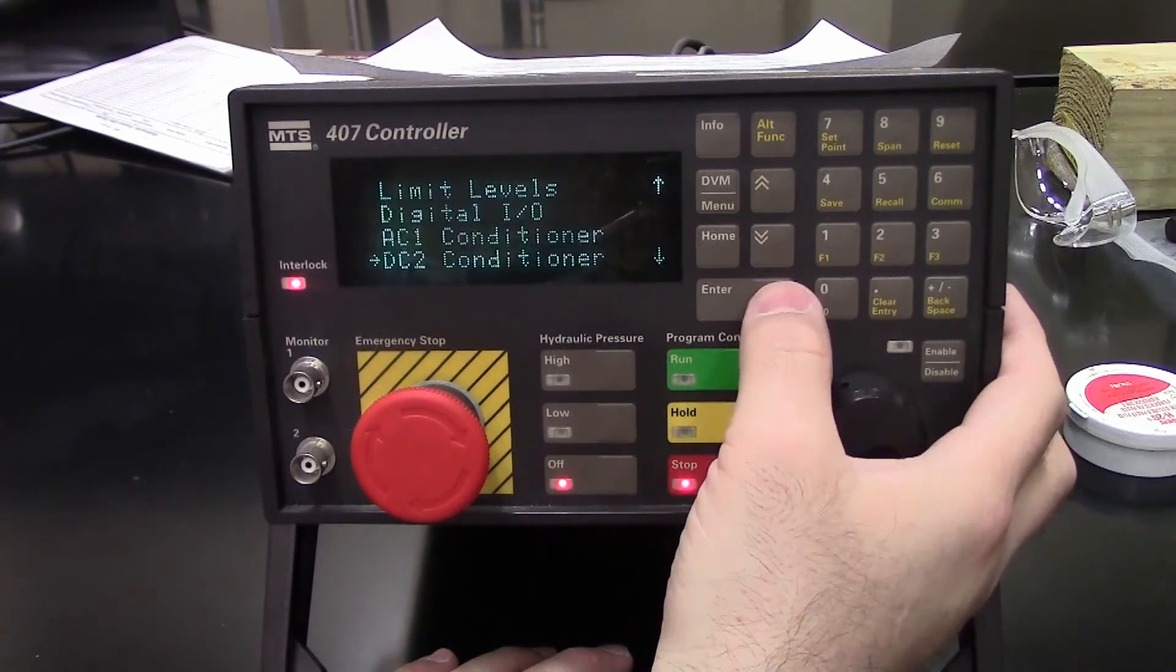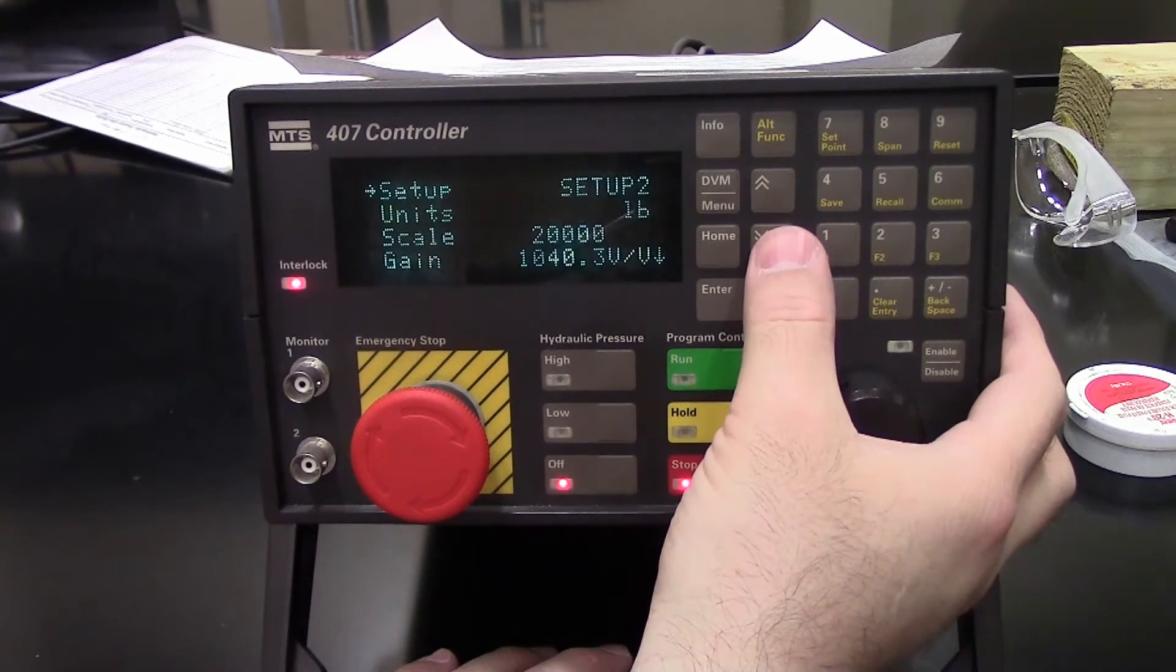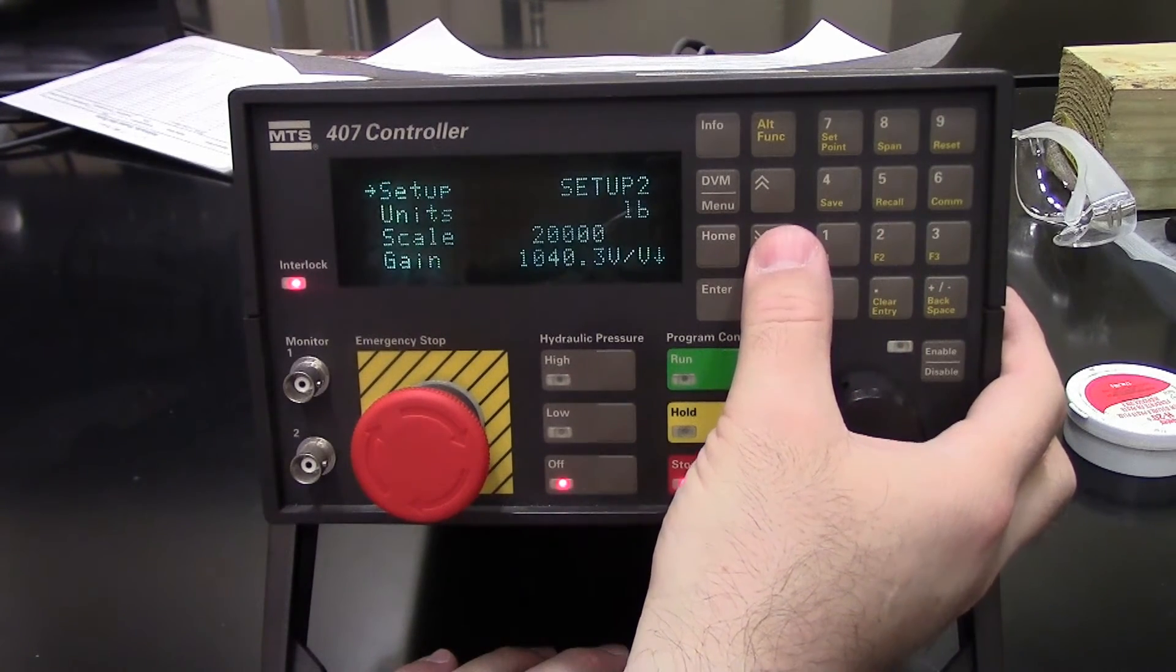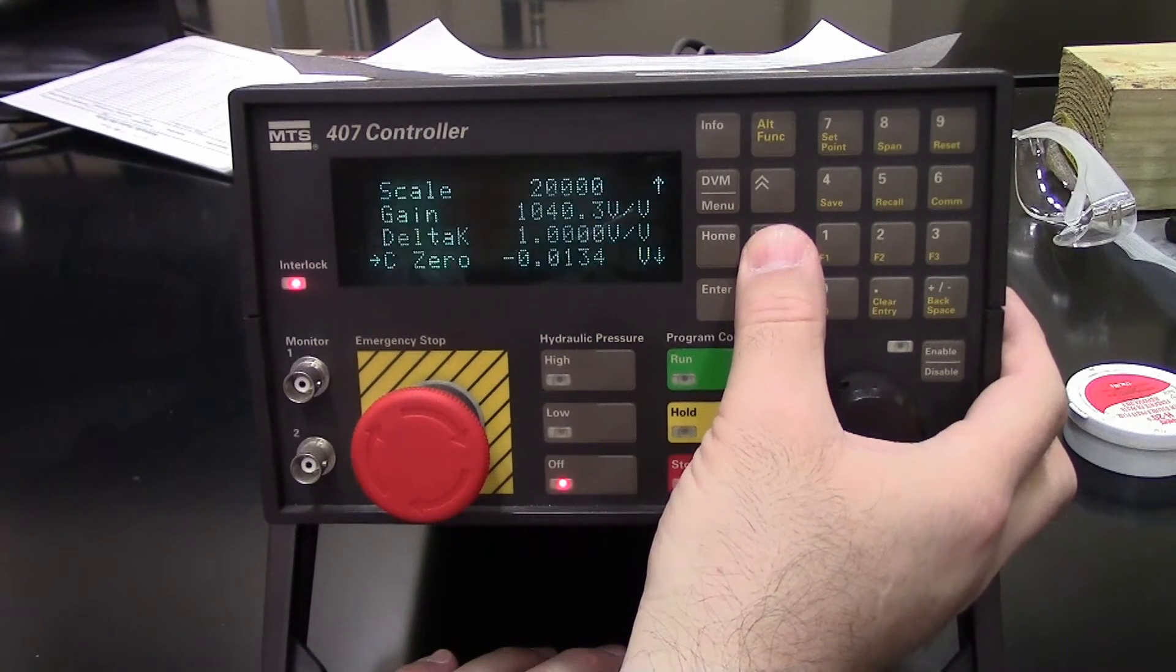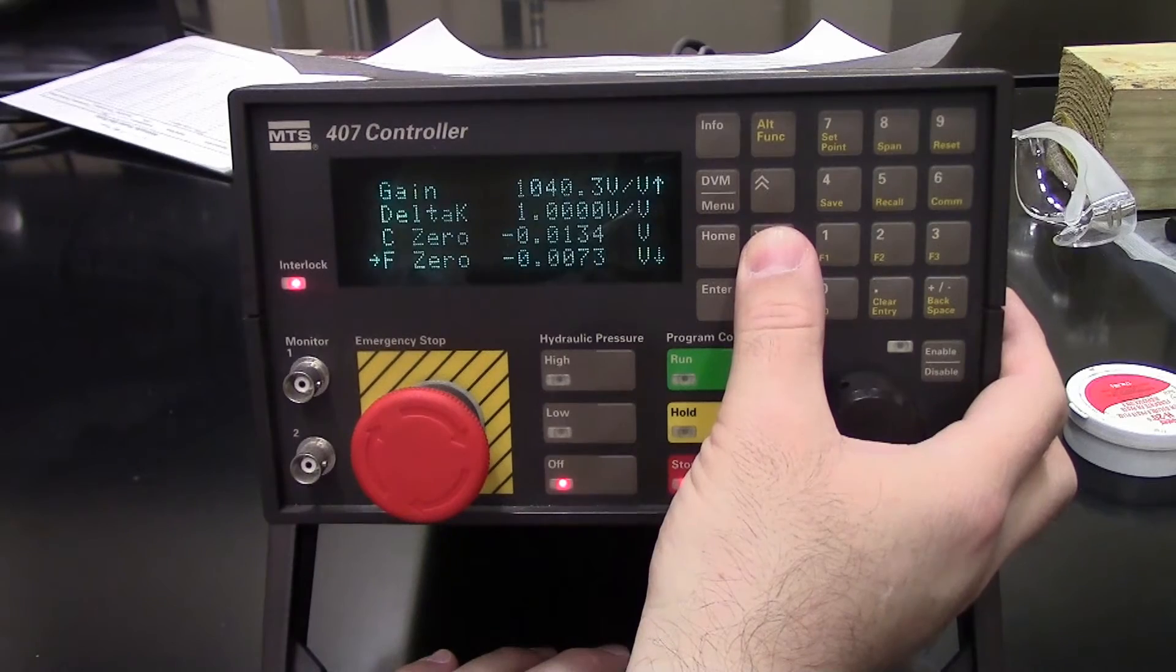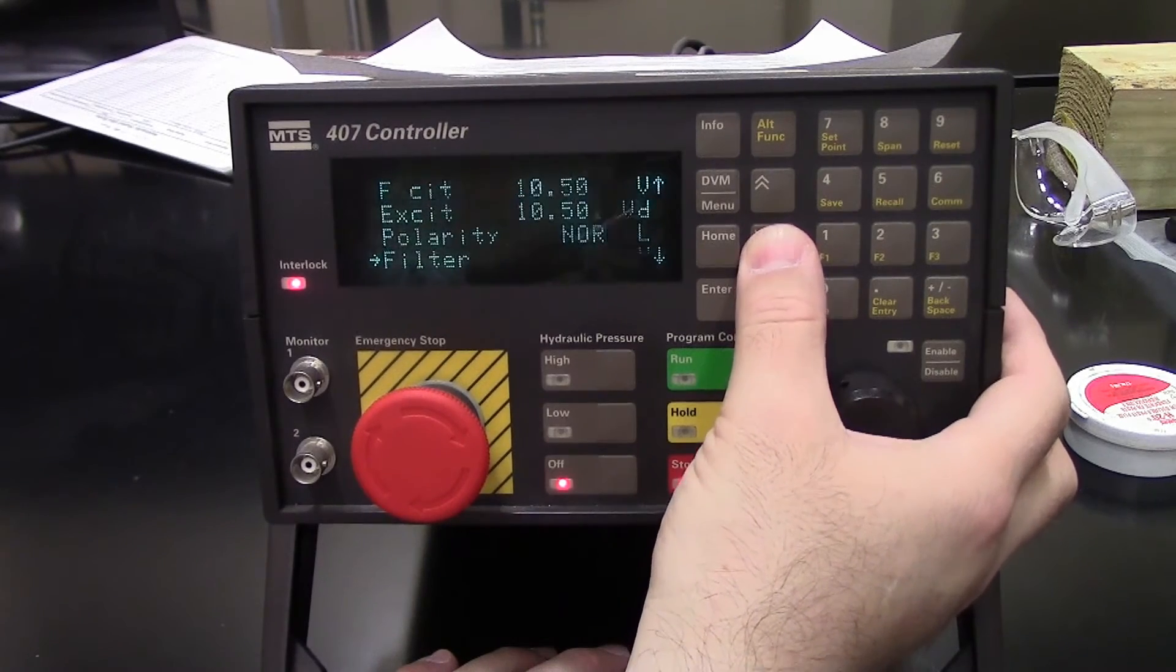Likewise, for the DC2 conditioner - again that's a load cell. This is for setup 2. It's a 20,000 pound capacity full scale for setup 2. It's a 50 kip machine, 50,000 pounds. There's my excitation polarity.